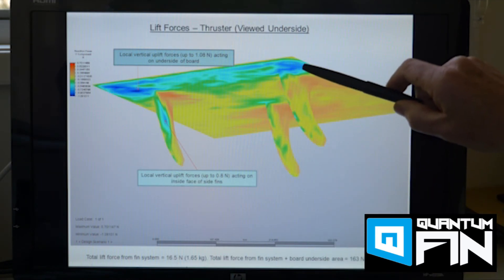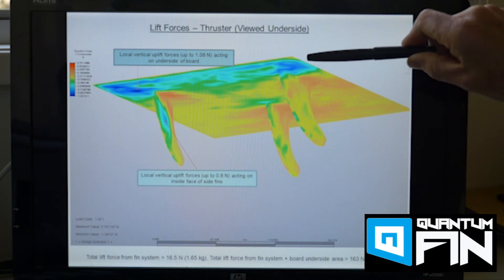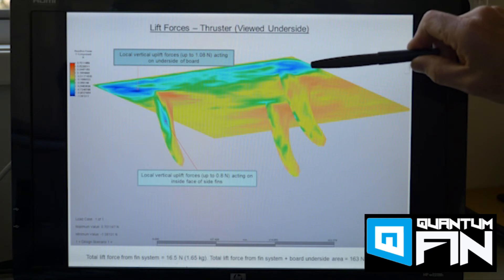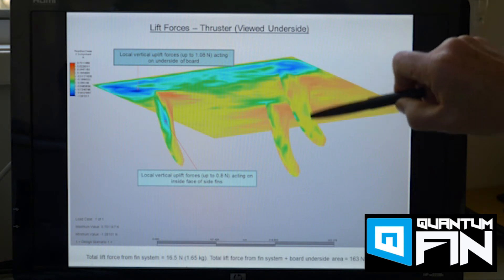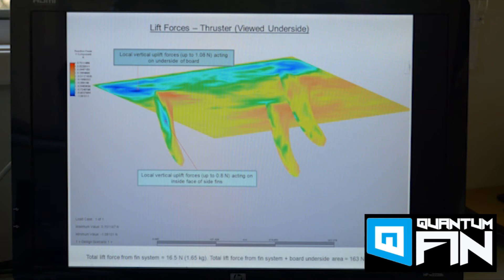So with the thruster setup the side fins have a slight cant angle and a slight toeing angle which means that they do generate some vertical uplift force. And the computer simulation tells me that the total lift force that's generated from the fins together with the board itself is in these conditions of the order of 16 kilograms worth of uplift force. So for somebody that's about 80 kilos you're looking at about one-fifth their weight of uplift force generated by the fins.